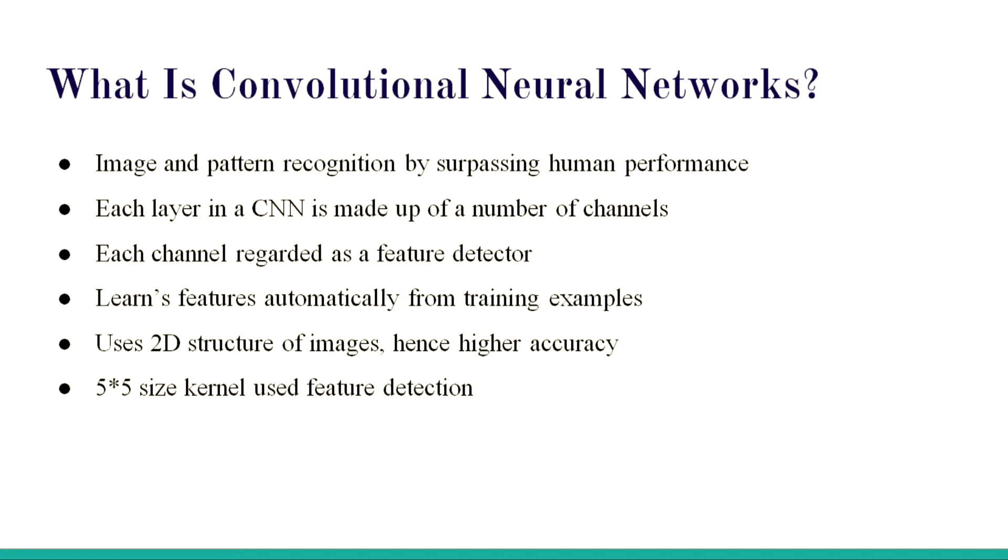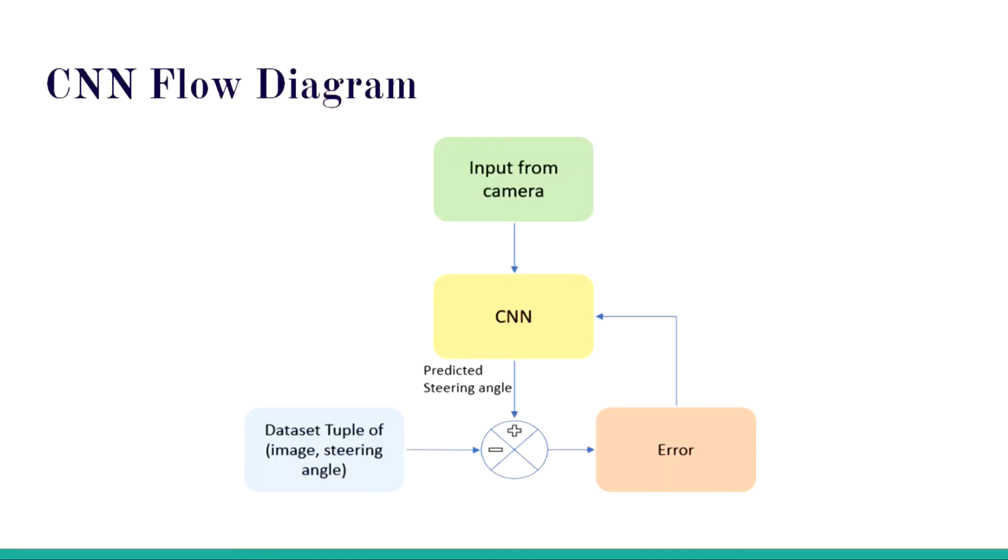The best part of CNN is minimum human intervention is required. The complete model, once the code is fed, is executed again and again and the model is trained automatically. Human intervention is reduced which is the main autonomous driving parameter. 2D images are taken and read, which results in higher accuracy. Our neural network uses 5 by 5 kernel size.